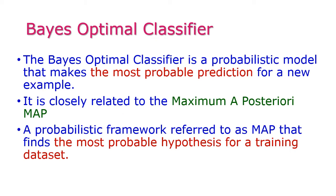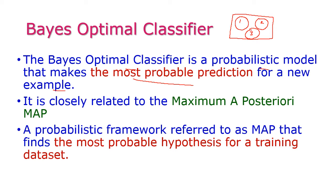Bayes Optimal Classifier is a probabilistic model that makes the most probable prediction for a new example. For example, this is our population. In our population there are three different classes: class 1, class 2, and class 3. All the samples will be classified into any of these three classes, and one new sample x will enter into the population. By using Bayes Optimal Classification we can easily predict which class x belongs to.